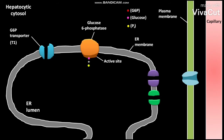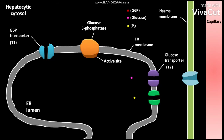The glucose and Pi are then released from the active site of glucose-6-phosphatase and reach the ER lumen. The ER membrane contains a glucose transporter (T2). The glucose present in the ER lumen is then transported to the cytosol by T2.